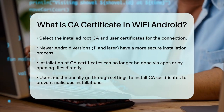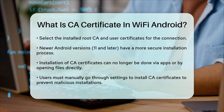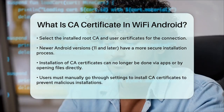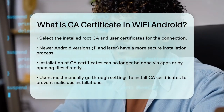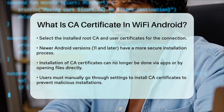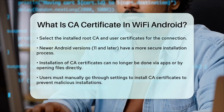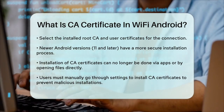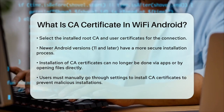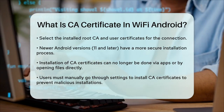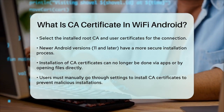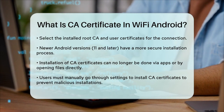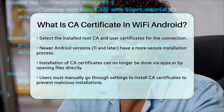In summary, a CA certificate on Android is a crucial component for securely connecting to wireless networks, especially in enterprise environments. It verifies the identity of the network and ensures your data is safe. By following the steps to install and use these certificates, you can enjoy a secure and reliable wireless connection.